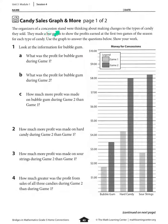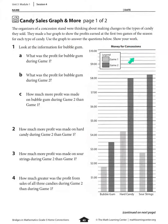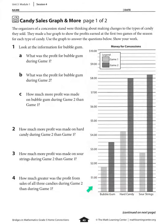The problem says: the organizers of a concession stand were thinking about making changes to the types of candy they sold. They made a bar graph to show the profits earned at the first two games of the season for each type of candy. Use the graph to answer the questions below and show your work. Looking at the graph, we see money for concessions. The legend shows light gray is game one and dark gray is game two. We see three types of candy: bubble gum, hard candy, and sour strings, with dollar amounts earned for each.